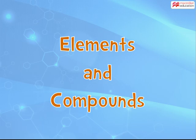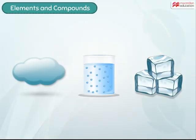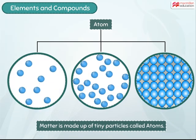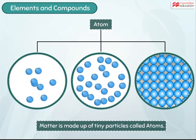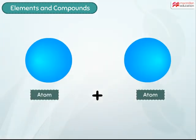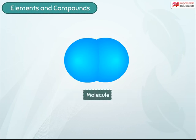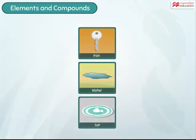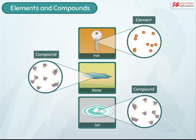Elements and compounds — everything around us, whether it is gas, liquid, or solid, is made up of matter. When matter is observed closely, it is seen to be made up of tiny particles called atoms. Atoms combine to form molecules that make up different kinds of substances around us. The molecules that make up matter can be classified as elements or compounds.